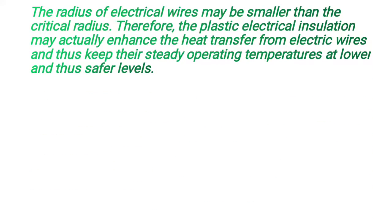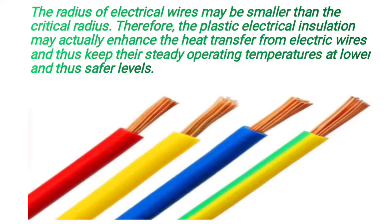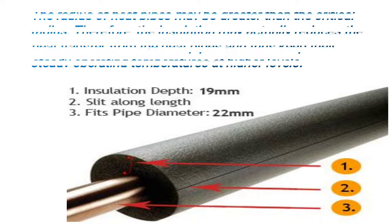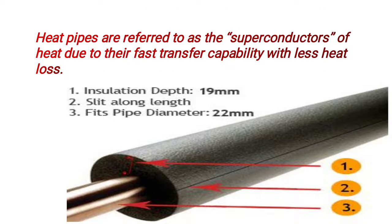The radius of an electrical wire may be smaller than the critical radius. Therefore, the plastic insulation may actually enhance the heat transfer from electrical wires and thus keep their steady operating temperature at lower and safer levels. The radius of heat pipes may be greater than the critical radius. Therefore, the insulation may actually reduce the heat transfer from the heat pipes and thus keep their steady operating temperature at higher levels. Heat pipes are referred to as the superconductors of heat due to their fast transfer capability with less heat loss. In heat pipes, the requirement is to reduce the heat loss, and in electrical wires the requirement is to increase the heat transfer rate.